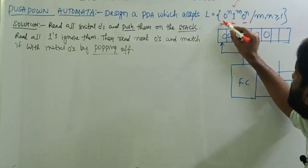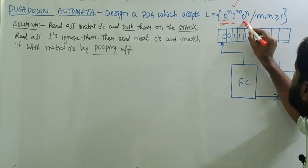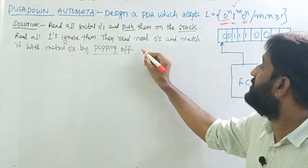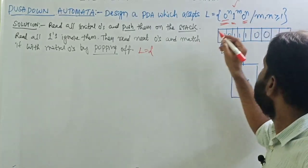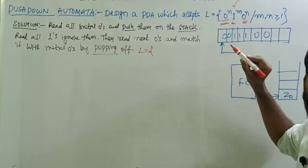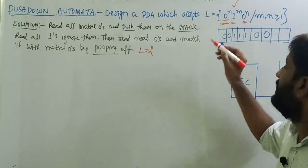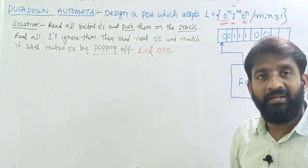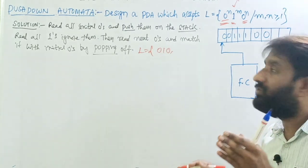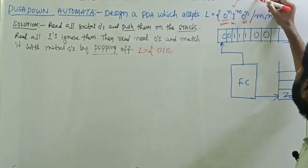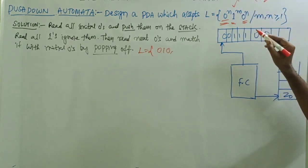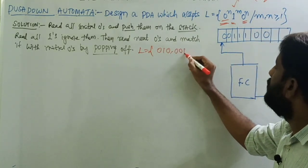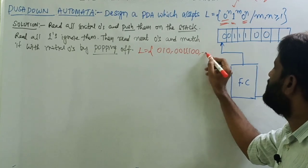The initial zeros and the final zeros must be equal. For example, if n=1 and m=1, the string is a single 0, single 1, single 0. If n=2 and m=3, the string is double 0, triple 1, double 0, and so on.